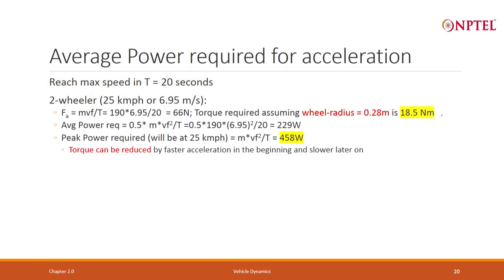So what is the average power required for acceleration, and what is the peak power required? If I take a two-wheeler and I want to reach 25 km/h in 20 seconds — that is 6.95 m/s — the force required is 66 N and the torque requirement is 18.5 N·m. This is due to acceleration alone; I have not taken other forces. Average power requirement is 228 W; peak power requirement is 458 W.